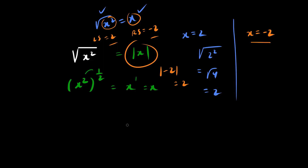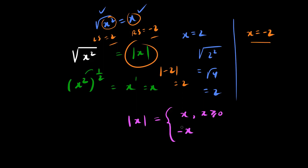So let's define the absolute value of x. The definition of the absolute value of x is: case 1 — just drop the absolute value sign when it's already positive, so when x is greater than or equal to 0 we rewrite it with no absolute value signs. In case 2, we can actually flip the sign, so the absolute value of x can also be negative x, given x is less than 0.